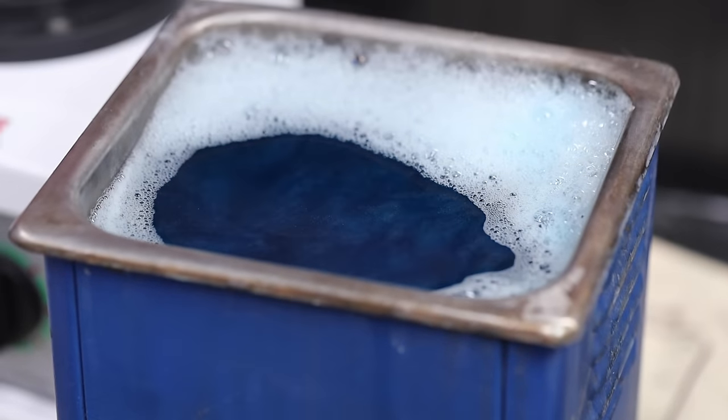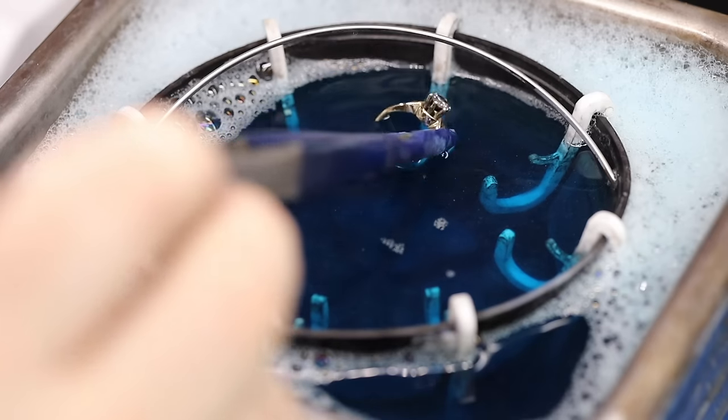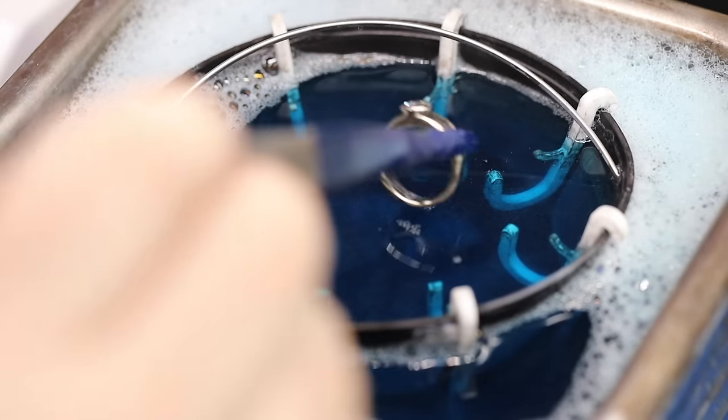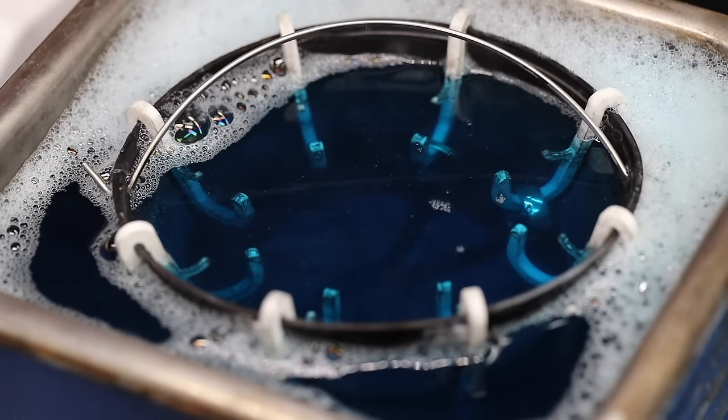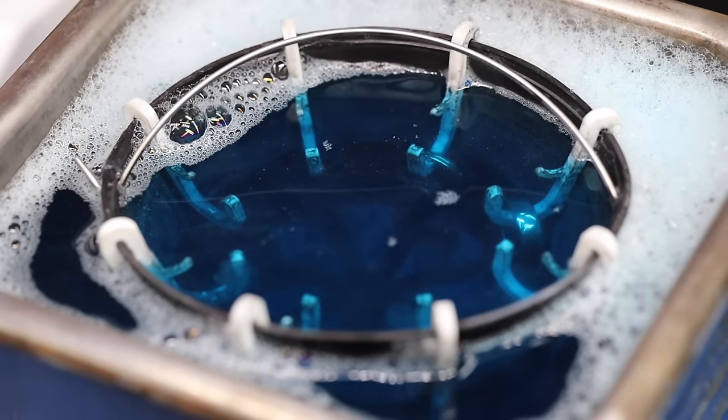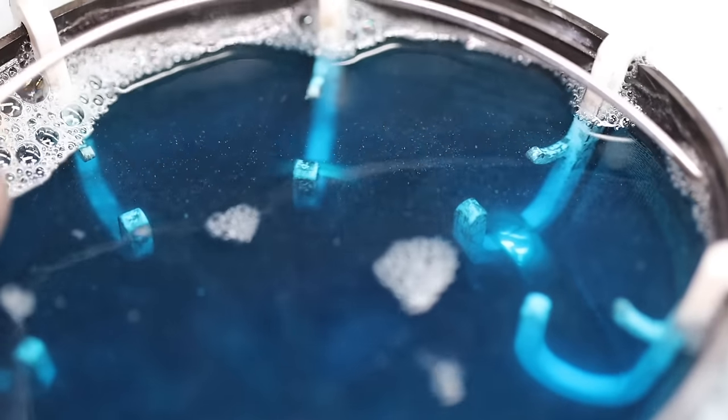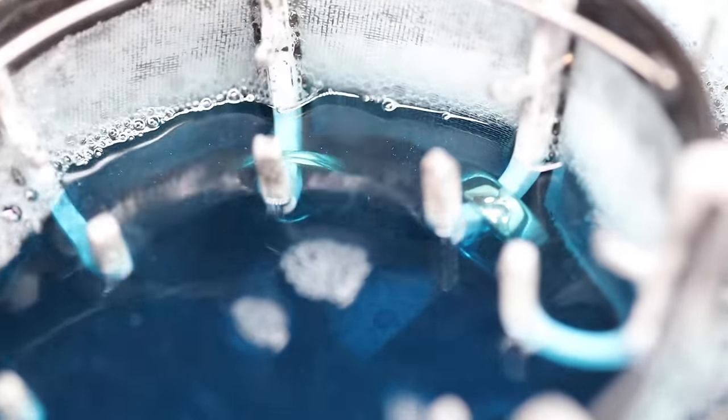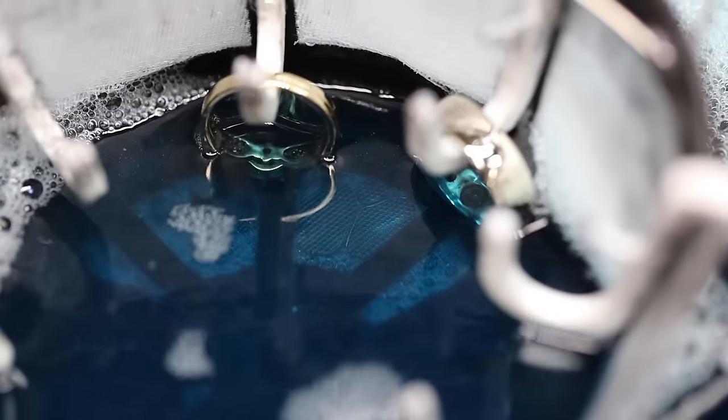After the rings have been polished, I take them over to my ultrasonic cleaner and I drop them in the basket. This ultrasonic looked pretty dirty the last few videos, so I cleaned it just for you guys. The ultrasonic cleaner works perfectly to remove all of that polishing compound off of the rings.